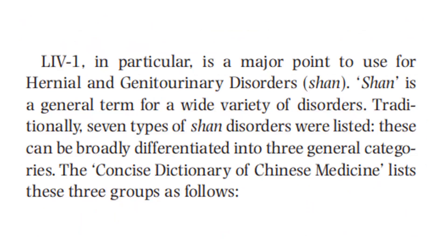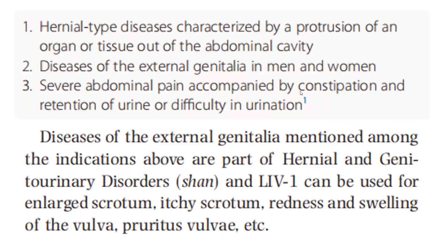The Concise Dictionary of Chinese Medicine lists these three groups as follows. First, hernia-type diseases characterized by a protrusion of an organ or tissue out of the abdominal cavity. Second, diseases of the external genitalia in men and women. Third, severe abdominal pain accompanied by constipation and retention of urine or difficulty in urination.